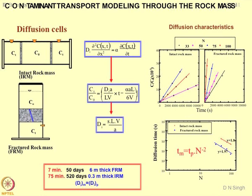If you solve this equation, the solution is: C_T by C naught equals D_i multiplied by area of cross section upon L into V volume, multiplied by time, minus alpha — a coefficient known as the retardation factor or sorption capacity — multiplied by area of cross section into thickness of sample divided by 6 times volume. A simple interpretation: if C_T by C naught is 0 at T equal to 0, this term equals that term, and if you know D_i and the geometrical properties — area, thickness, volume — you can get alpha. So alpha is nothing but the sorption capacity of the material. By doing this simple test you can get both sorption capacity and the diffusion coefficient of the porous system.